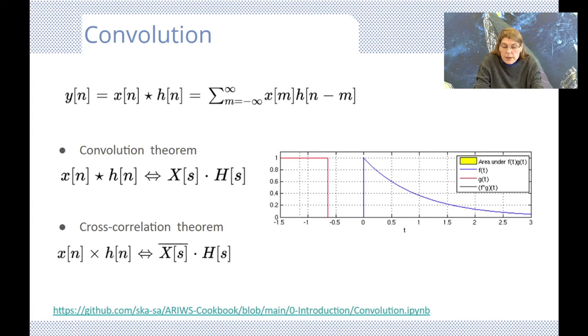When the convolution theorem states that the Fourier transform of a convolution of two functions is simply the product of their individual Fourier transforms. Which means that convolution in the frequency domain is much simpler, just a multiplication function, and faster and easier.